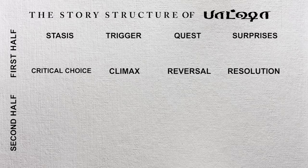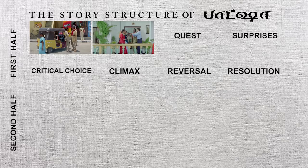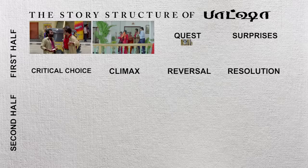The 8 points are as follows. Stasis is the everyday life of our protagonist — Manikam is an honest, hard-working auto driver. Trigger is an event that usually makes our protagonist go on a quest. In this case, Manikam's three step-siblings each bring a trigger that makes Manikam go on a quest to fulfill their life dreams and his promise to his dead father.